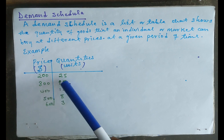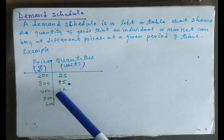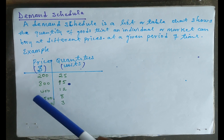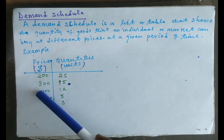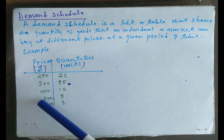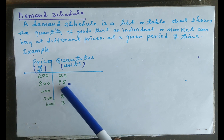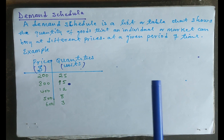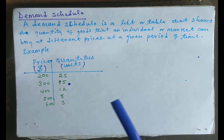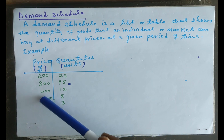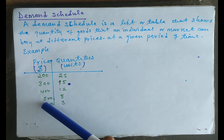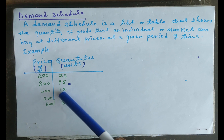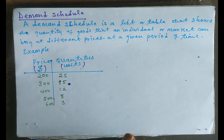As price increases from 400 to 500 US dollars, the quantity demanded falls from 15 units to 12 units. This practically shows the law of demand — that lesser of a good is demanded at higher prices. From the last data point, we see that when price increases from 500 to 600, quantity demanded falls from 8 to 3 units.